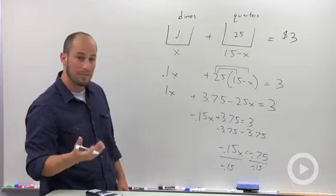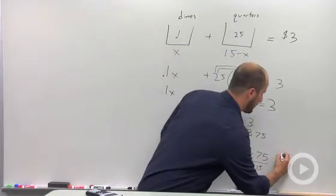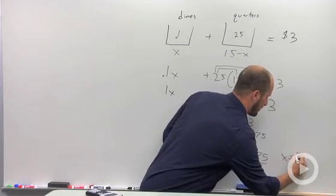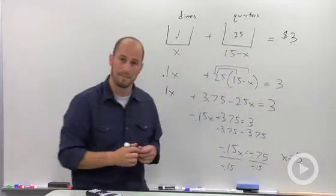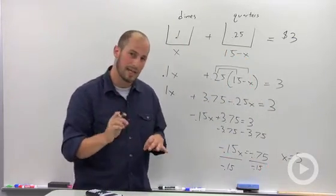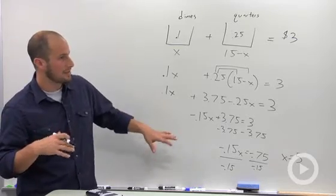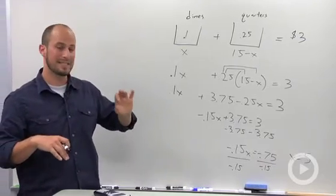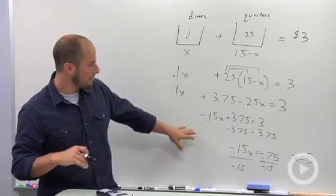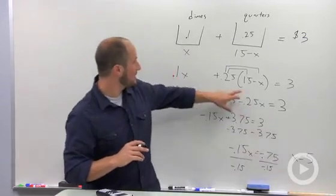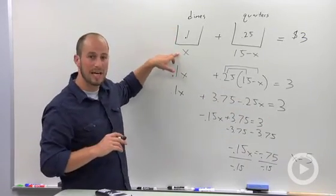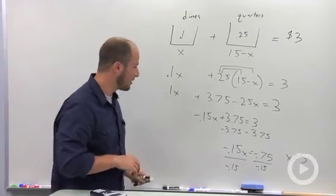0.75 divided by 0.15 is equal to five. X is equal to five. Okay, as always with word problems, make sure you're answering the question that you're asked. So the question is asking for how many of each denomination do I have. What we found is X, which we said is the number of dimes, so we know that we have five dimes.